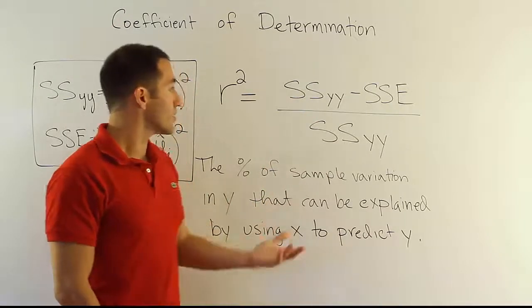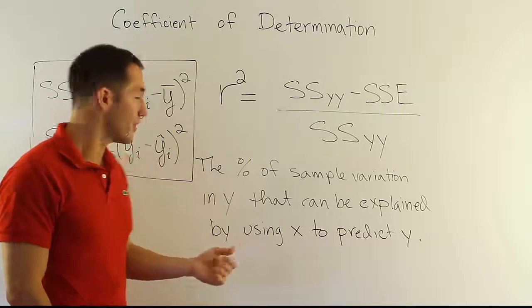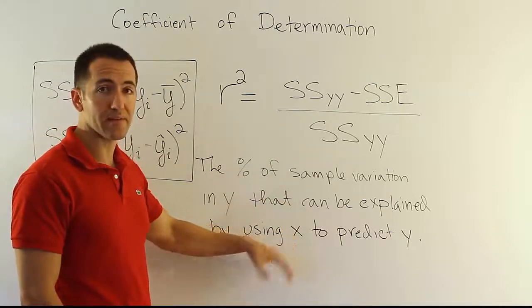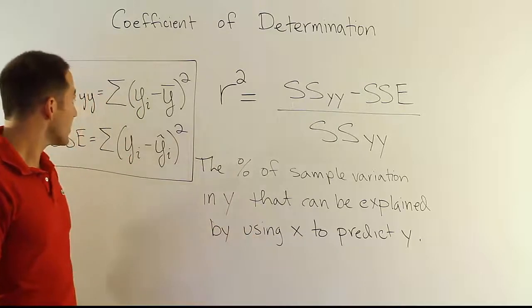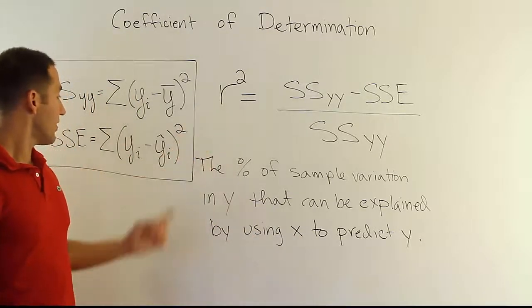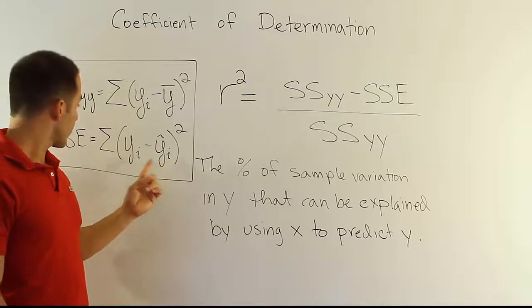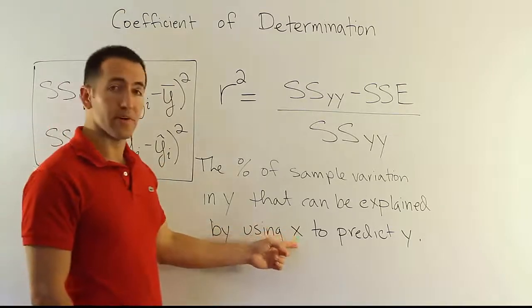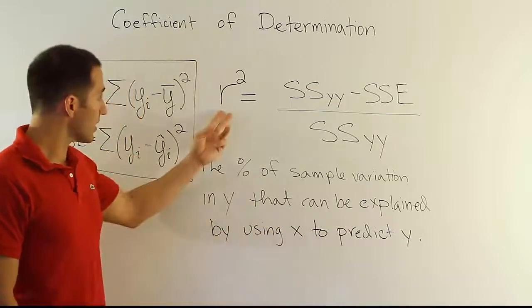So that's essentially the idea. This measures that relationship. If the predicted values are very close to the observed values, it means the model is very good, and x is a very good predictor of y, and we reflect it in r squared.